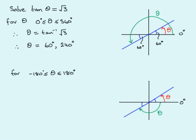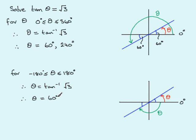To find the angles, inverse tan of √3 gives us 60°. That's the red theta, so I mark it in as 60°.